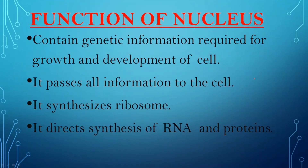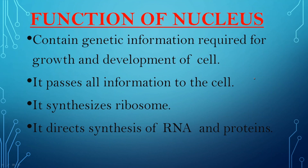Now coming to the functions of nucleus. First, all the activity of the cell is controlled by the nucleus — it contains the genetic information required for the growth and development of the cell. Second, it passes all information to the cell; when a cell divides, the nucleus moves to the newly formed cell carrying all information required for its working. Third, it synthesizes ribosomes, which are responsible for protein synthesis. And fourth, the nucleus is involved in the direct synthesis of RNA and protein.